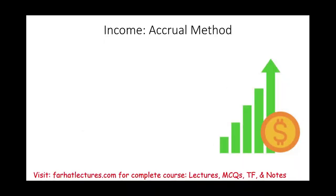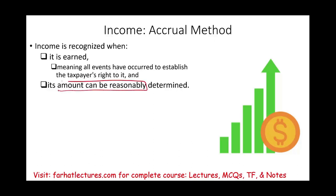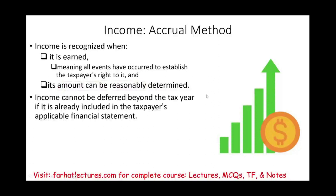Let's look at revenue or income under the accrual method. When do we recognize income? It must be earned, meaning all events have occurred to establish the taxpayer's right to it — you did the work and can tell the customer they must pay you. It has to be reasonably estimatable, meaning you know the amount you expect to receive. Bear in mind, income cannot be deferred beyond the tax year if it's already included in the taxpayer's applicable financial statement.